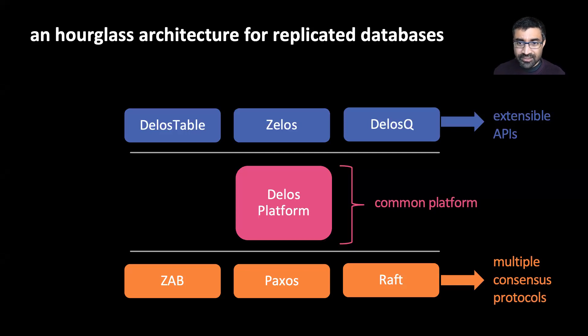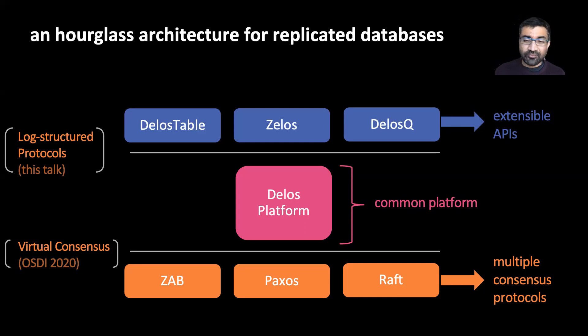Based on this observation, Delos proposes a novel hourglass architecture for replicated databases. At the top, we have multiple user-facing APIs, such as relational table, zookeeper, and queues, supported over a narrow waist of platform code, which in turn can run over multiple consensus protocols. In last year's OSDI conference, we described virtual consensus, which is a mechanism that lets us run a single database over different consensus protocols. In this talk, I'm going to describe the top half of the hourglass, log-structured protocols, which allow us to layer multiple APIs on a common platform.